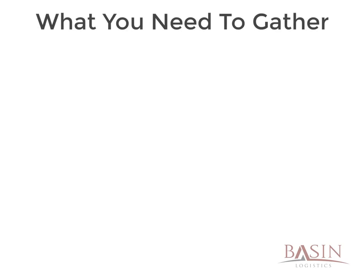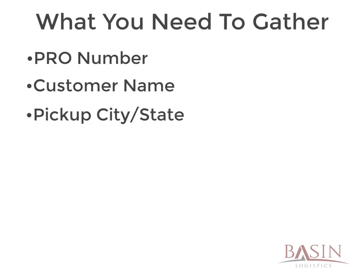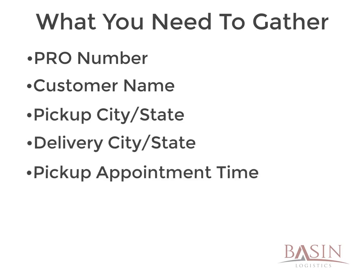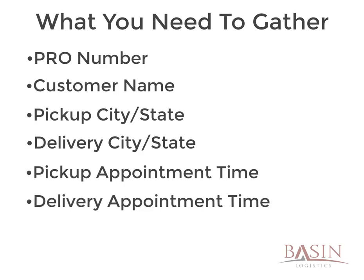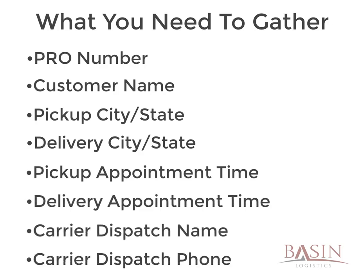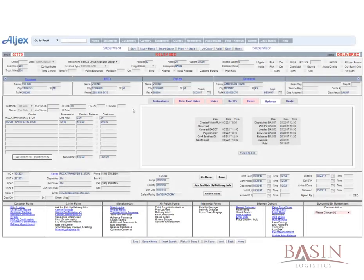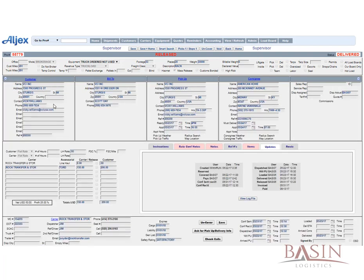After you have opened the load, the information you will need to gather is the pro number, the customer name, the pickup city and state, the delivery city and state, pickup appointment time, delivery appointment time, carrier dispatcher name, and the carrier contact number. The first thing you will need to do is click the plus button to expand the details of the load, located here. Be sure to gather the pertinent information from this section while you are here.